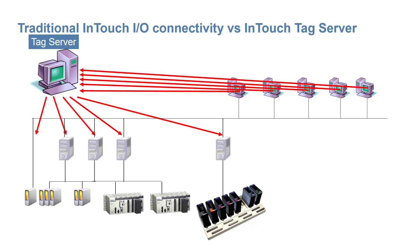Whereas the demand on the back-end data sources is the difference between crashing this old infrastructure and a working system. The tag server makes a request for fresh data from the plant equipment and caches the response. Then the tag server handles multiple requests for the same values for many clients.